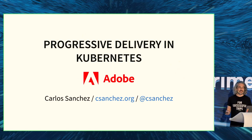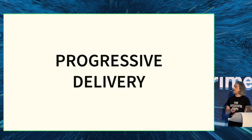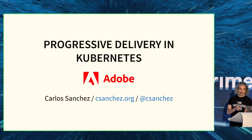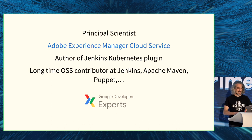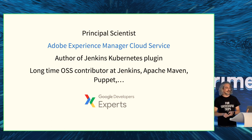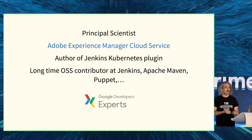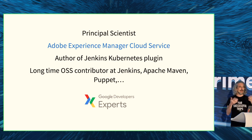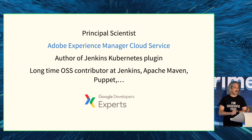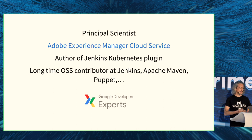My name is Carlos Sanchez. I'm a principal scientist at Adobe, Adobe Experience Manager Cloud Service. I did a lot of open source work — I started the Jenkins Kubernetes plugin and contributed to projects like Jenkins, Maven, Puppet, and so on. I'm also part of the Google Developer Experts program.